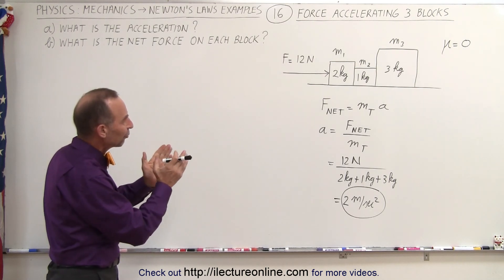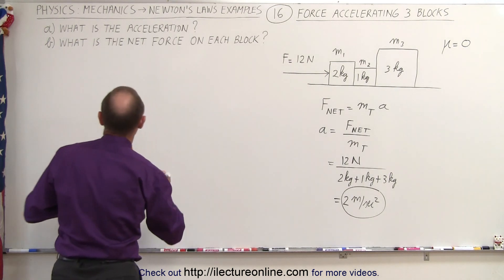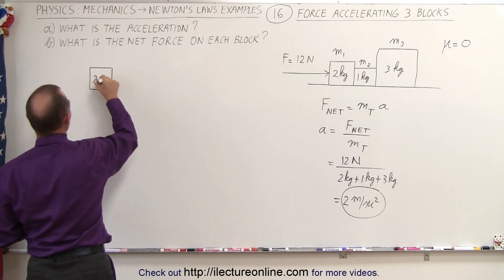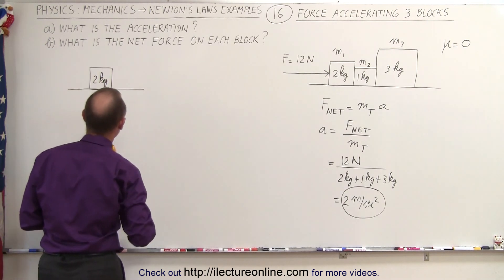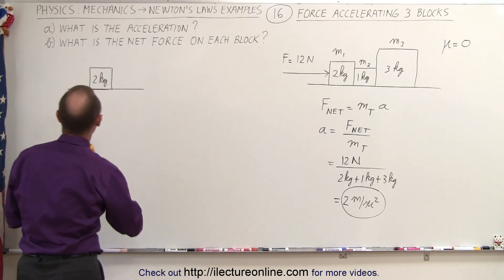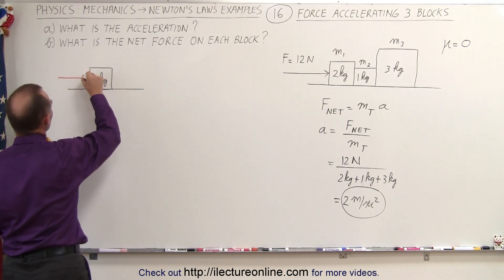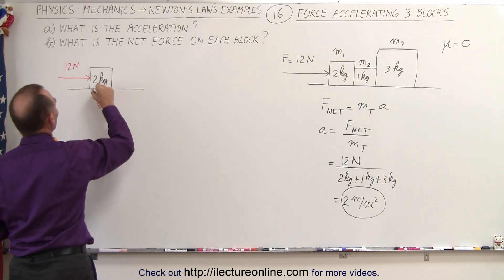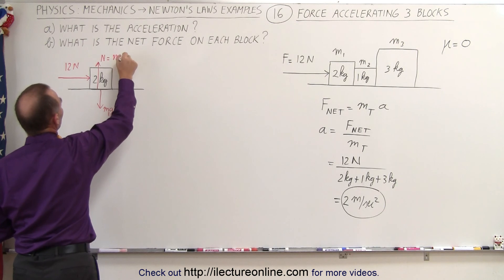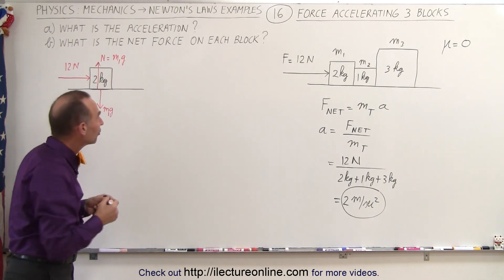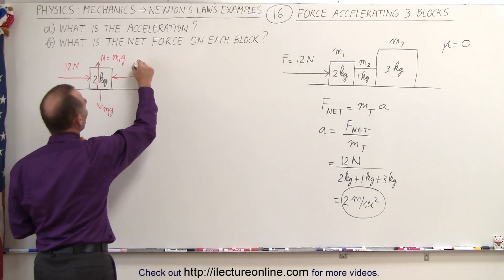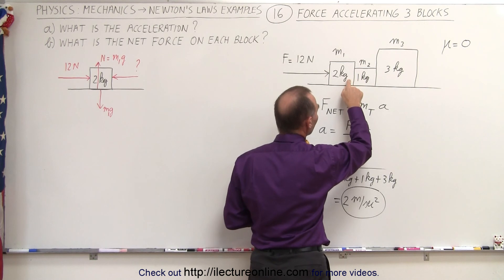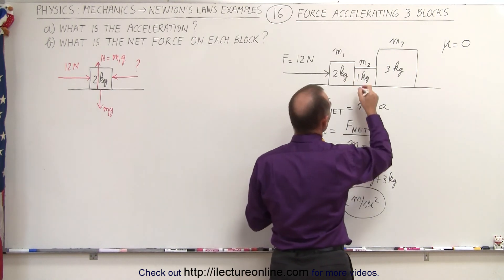Now if we're trying to find the net force on each block, we draw a free body diagram. Taking the first mass M1, we draw the block — a 2 kilogram block — sliding over the floor without friction. Looking at all the forces acting on it: on the left, we have a force of 12 newtons pushing on the block. We have the weight of the block, M1g, and then the normal force pushing back, which is also equal to M1g, so those two forces cancel each other out. And then there's another force pushing in the opposite direction.